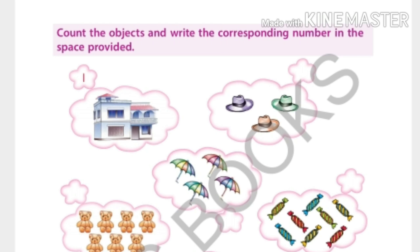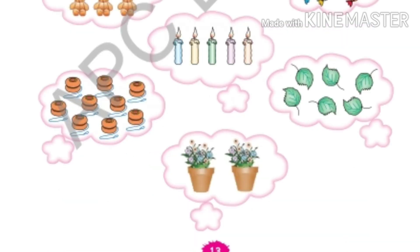Toffees. How many toffees are there? Count and write it by yourself. Here also you can see candles. How many candles are here? One, two, three, four, five. Now how many leaves? And how many pots are here? And how many buns are here? That you will do it by yourself by counting.